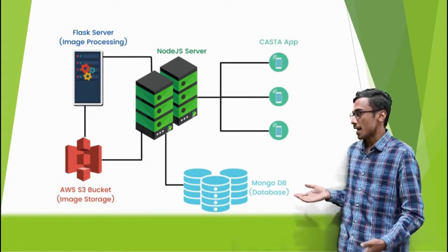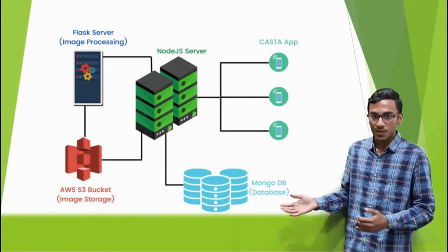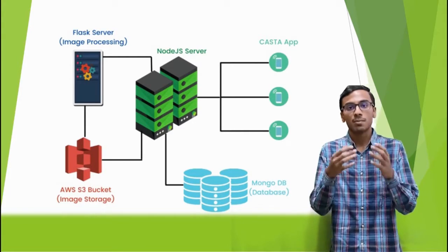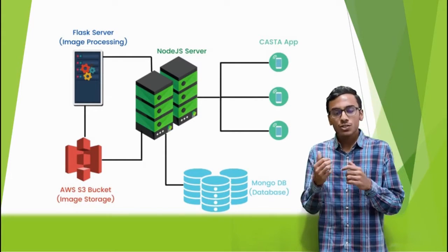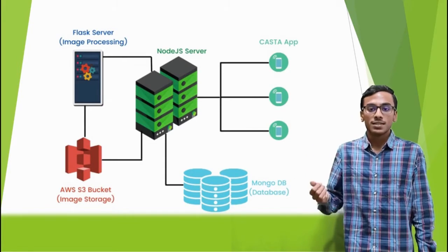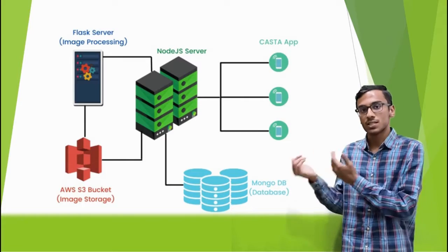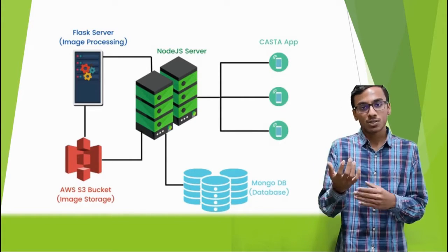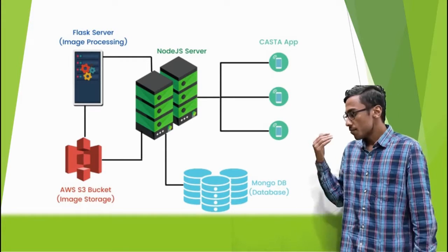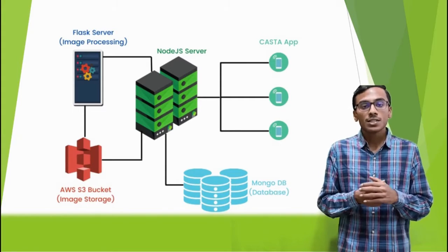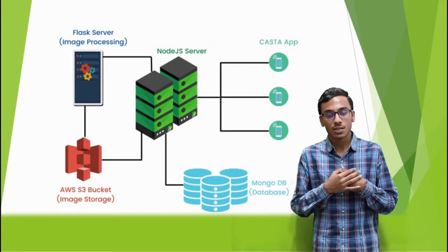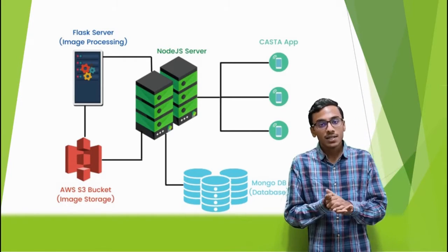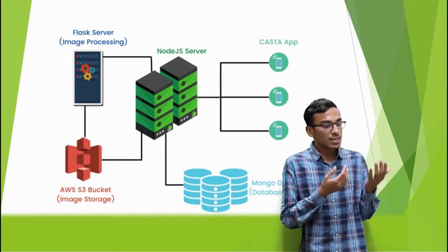The back-end architecture for our KASTA app has three parts: the Node.js server, the Flask server, and MongoDB. Node.js acts as the main server and main endpoint to which the app sends requests and gets responses. Flask is used as a microservice that handles all the image processing, running the image processing code in Python and sending results back to the Node.js server. MongoDB is a document-oriented database, very useful for our use case since all our images and URLs are stored as document database entries.